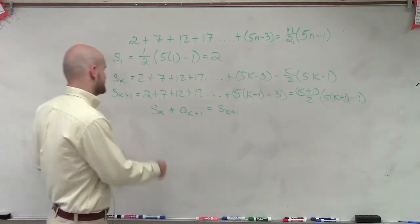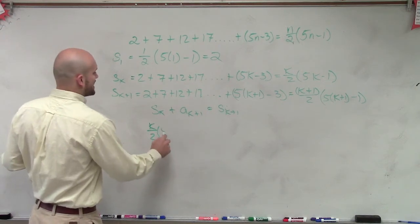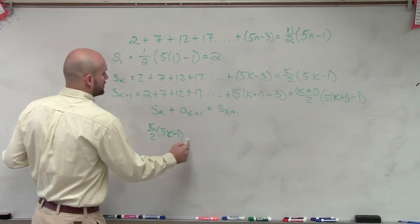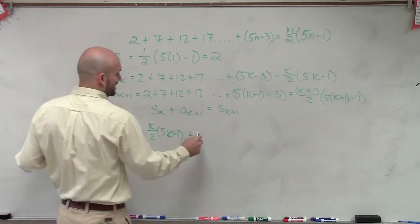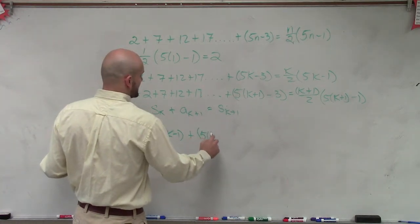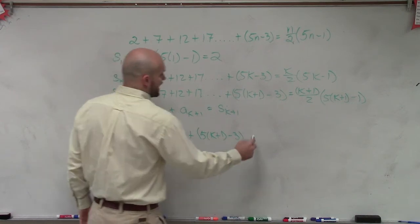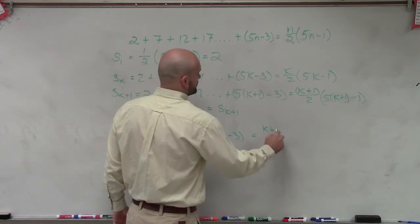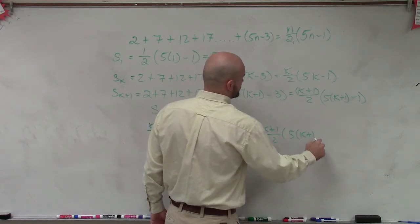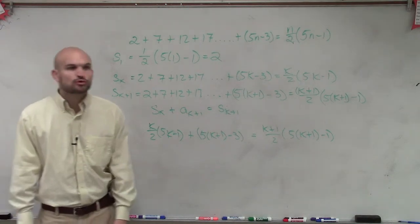So what we're essentially trying to prove is that k over 2 times 5k minus 1 plus my a of k, which, let's write it out, 5 times k plus 1 minus 3 has to equal k plus 1 divided by 2 times 5 times k plus 1 minus 1.